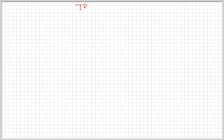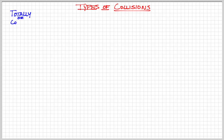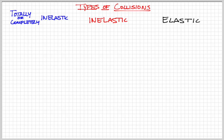We are now going to talk about different types of collisions. This part should go pretty quick. There are only three different types: totally or completely inelastic collisions, regular inelastic collisions, and elastic collisions. Think of it as a spectrum from totally inelastic to inelastic to elastic. We'll start with totally inelastic.